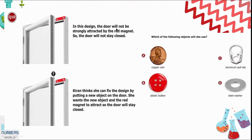Question 10: In the design, the door will not be strongly attached by the red magnet, so it won't stay closed. Kiran thinks she can fix this by putting a new object on the door so it attracts the red magnet. Options are copper coin, plastic button, aluminium pull tab, and steel washer. She should use the steel washer because magnets attract materials made of steel. Option D is correct.